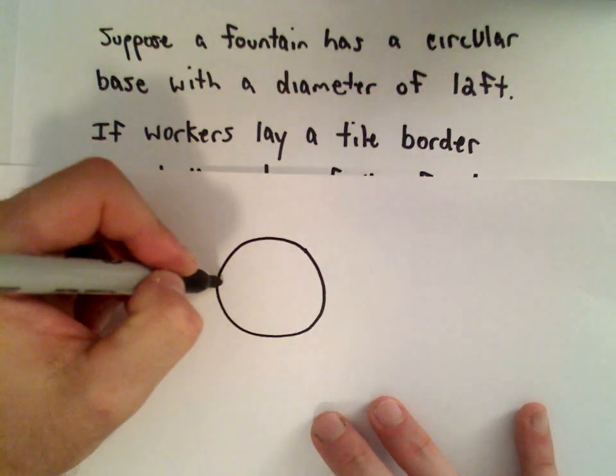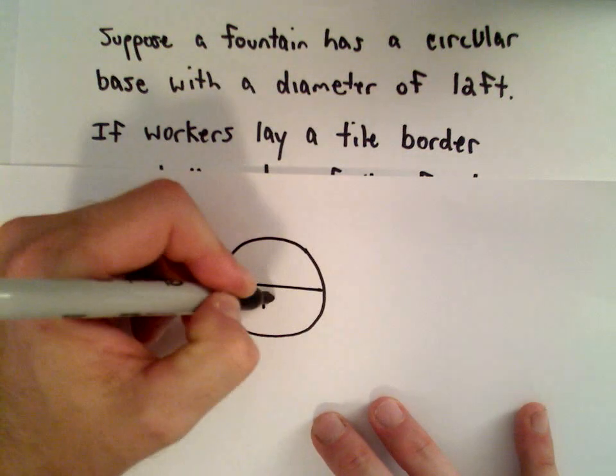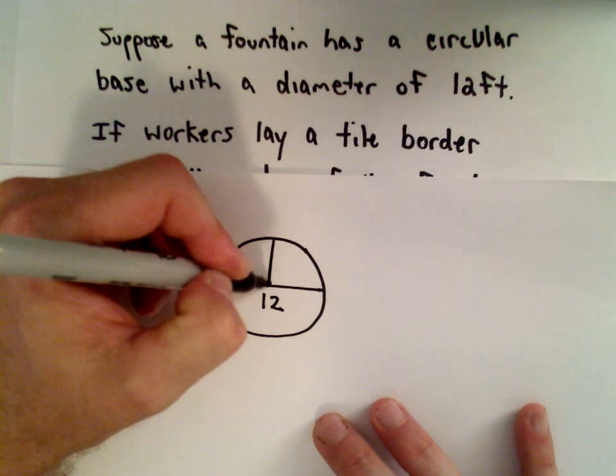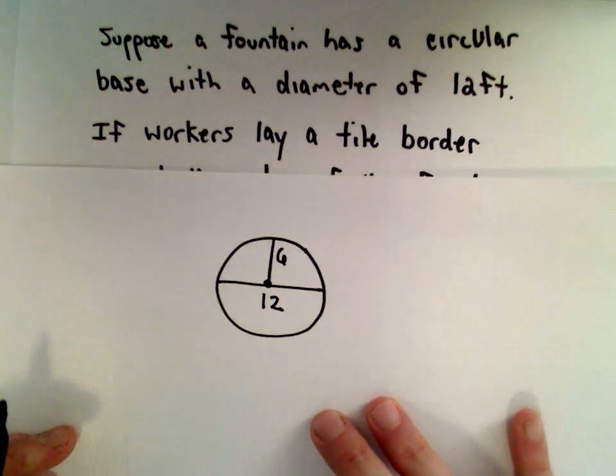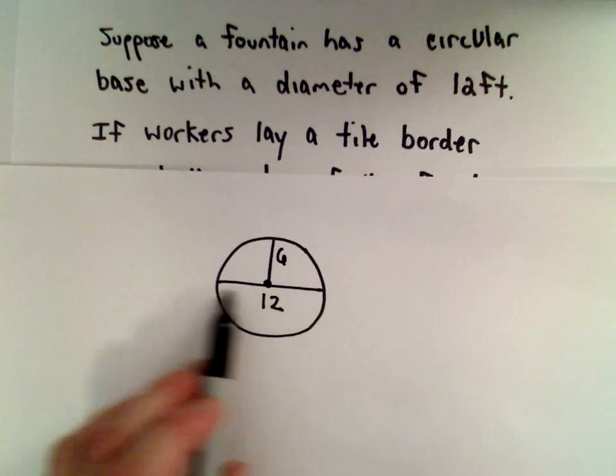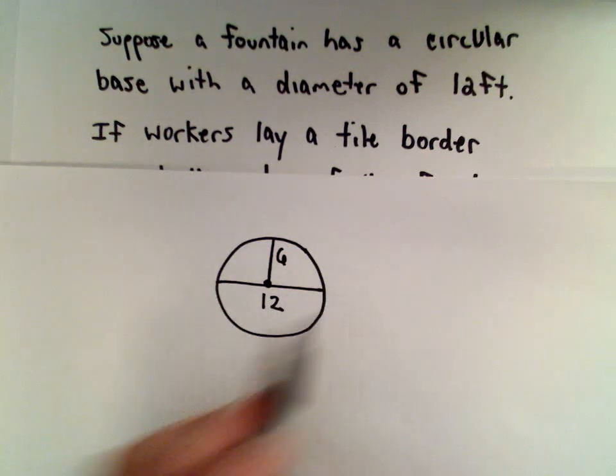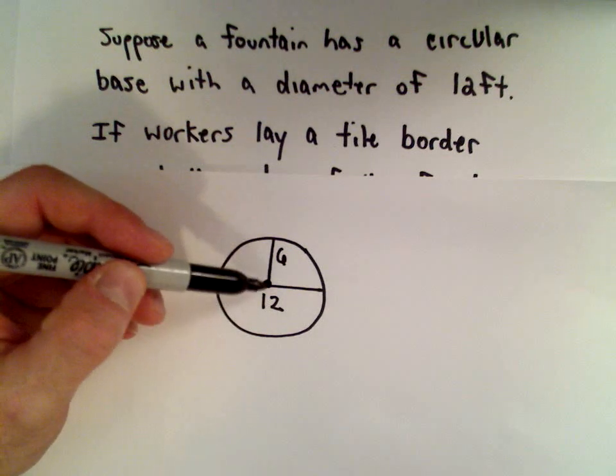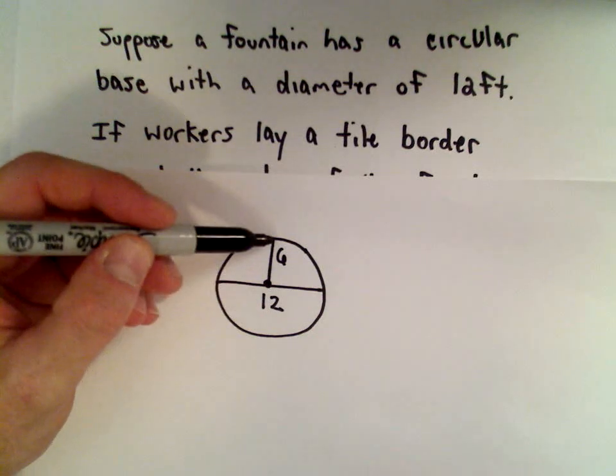It has a diameter of 12 feet. That means it has a radius of 6 feet. Recall that the diameter is the distance all the way across the circle, and the radius is just the distance from the middle of the circle out to one edge.